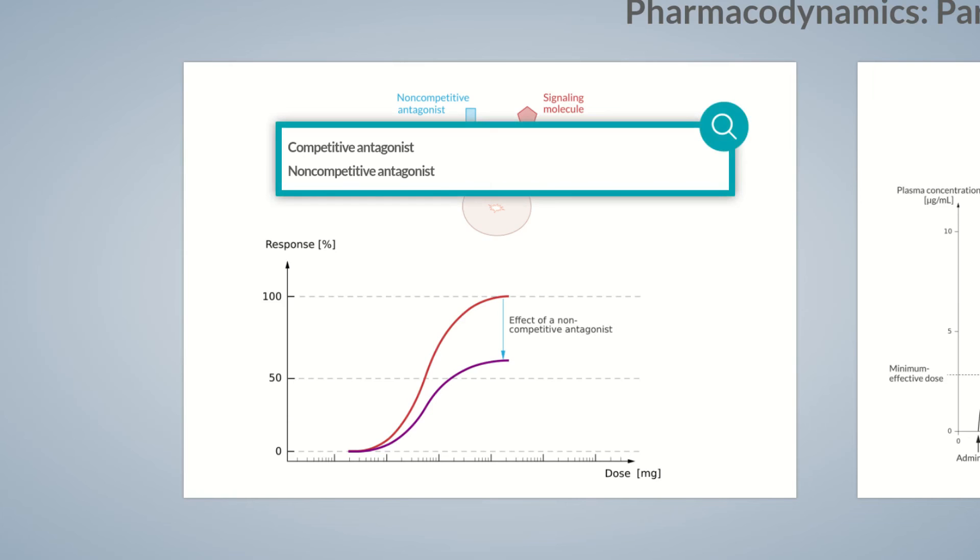This results in a therapeutically relevant consequence. The effect of a competitive antagonist can be completely reversed if the signaling molecule concentration is increased or an appropriate agonist is administered at a sufficiently high concentration. This isn't possible with non-competitive antagonists because they don't compete directly with the signaling molecules and therefore don't form an equilibrium.